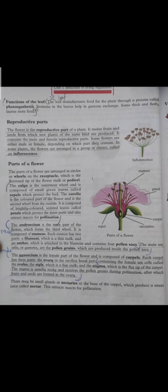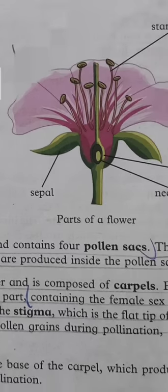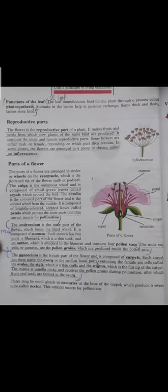There may be small glands or nectaries at the base of the carpel, at the bottom of the carpel here, which produce a sweet juice called nectar. This is usually sucked by bees and hummingbird-type birds, which attracts insects for pollination.